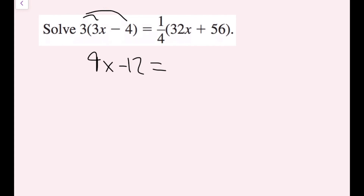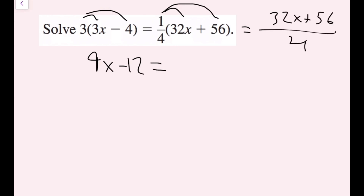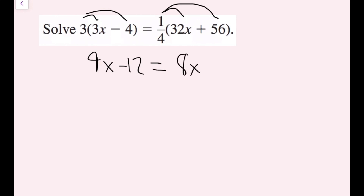On the right side, I have one-fourth to distribute. Remember, multiplying by one-fourth is the exact same thing as dividing by 4. This is the same as 32x plus 56 all over 4. So I'll just think of it as division: 32x divided by 4 is 8x, and 56 divided by 4 is 14.